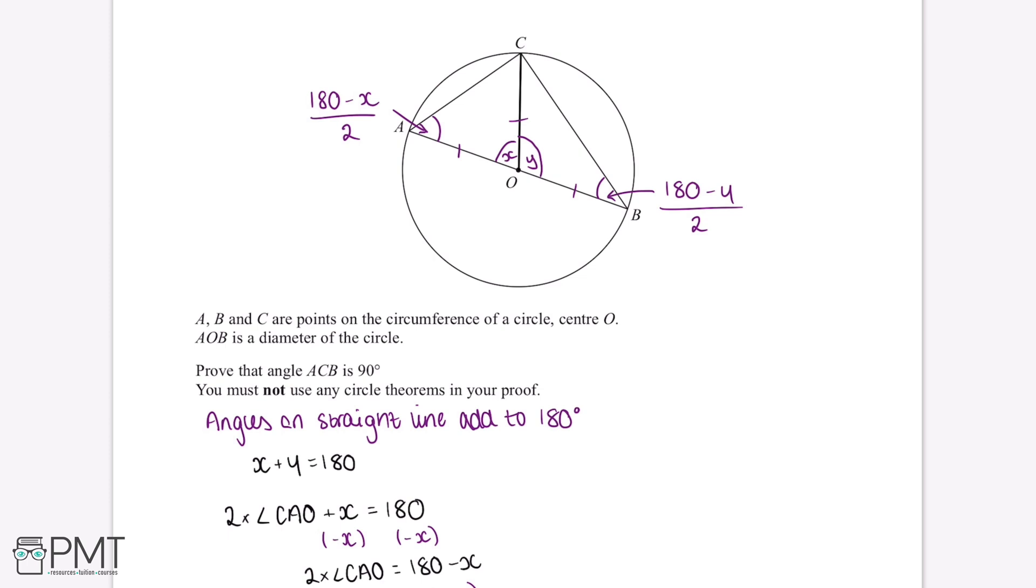Now we have 2 out of 3 of the angles on this triangle. Because angles in a triangle add up to 180 degrees, when we add together angle CAB, angle ABC and angle ACB, this will give us 180 degrees.